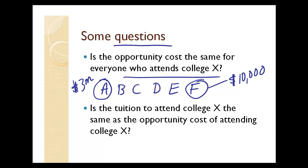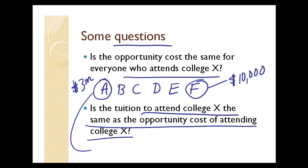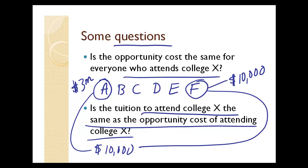Is the tuition to attend college the same as the opportunity cost of attending college? The answer is no. It could be that persons A and F, if they attended college, pay the same tuition — let's say ten thousand dollars. So the tuition for A is ten thousand dollars and the tuition for F is ten thousand dollars, but the opportunity cost is not the same for these two individuals, although the tuition cost is.